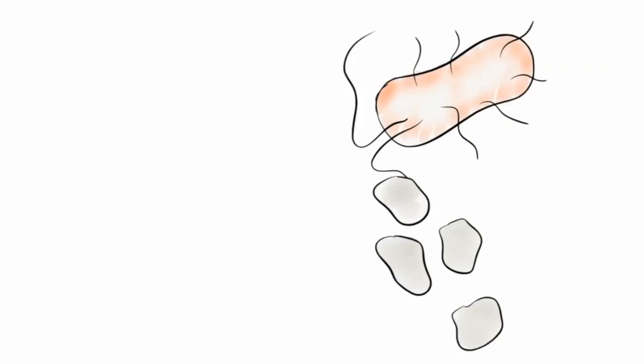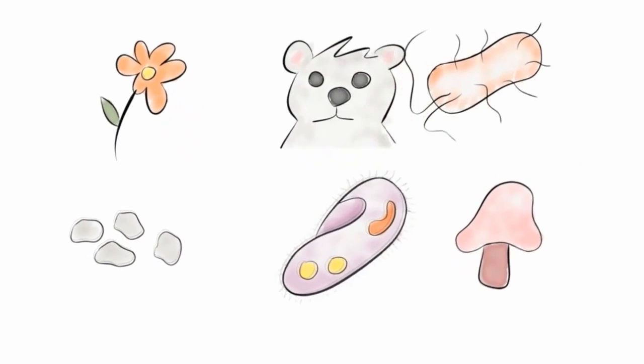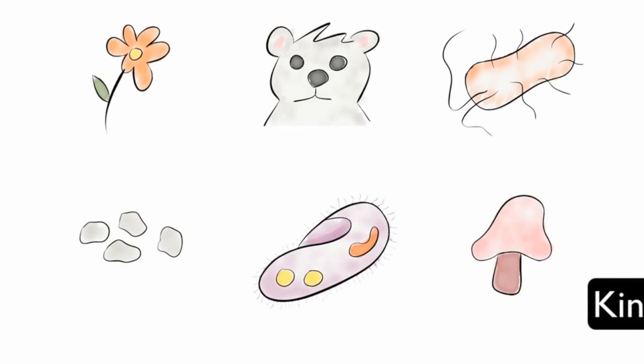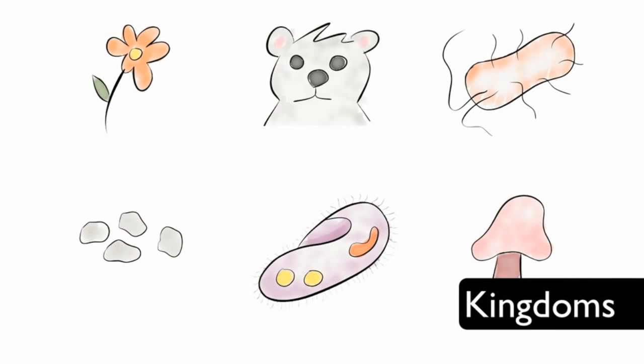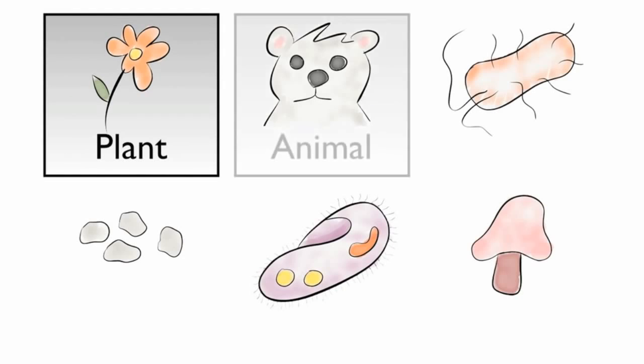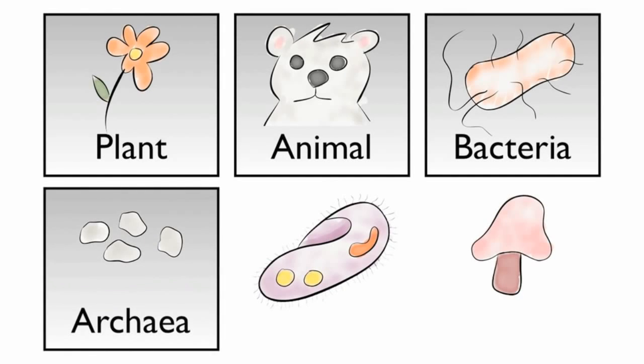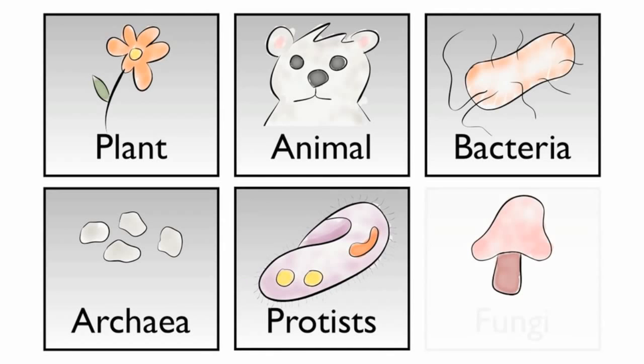All life on Earth can be placed into one of six groups based on similarities. The groups are called kingdoms. The six kingdoms are plant, animal, bacteria, archaea, protists, and fungi.